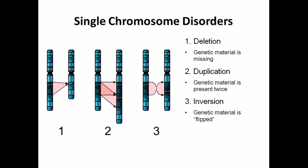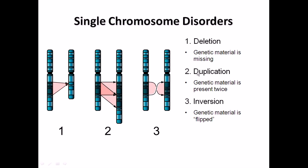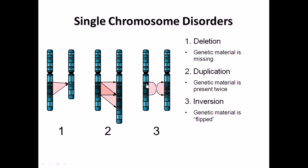Looking at single chromosome disorders, there can be deletion, where some part of the chromosome is deleted and it becomes shorter. Sometimes a part will be duplicated, meaning a single part is repeated and added to the previous one, so the chromosome length becomes slightly elongated.